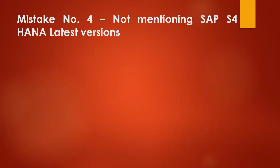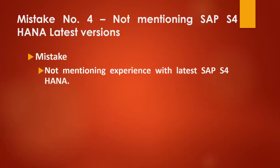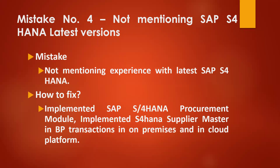Mistake four: Not mentioning SAP S4 HANA latest version. Many resumes do not mention versions at all — they just write SAP consultant or SAP on-hold. How to fix it? Specify: Implemented SAP S4 HANA procurement module, SAP MM module. Implemented S4 HANA supplier master in BP transaction code, on-premises or in cloud deployment. Be a clear, version-specific specialist.